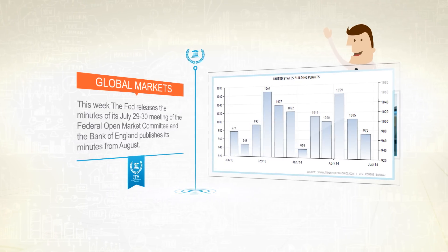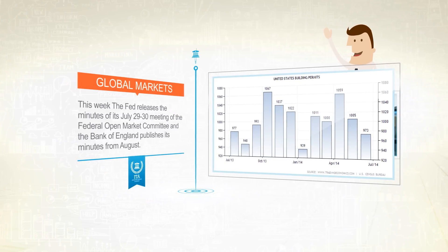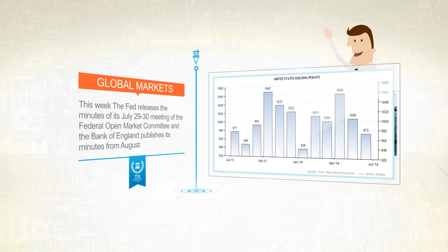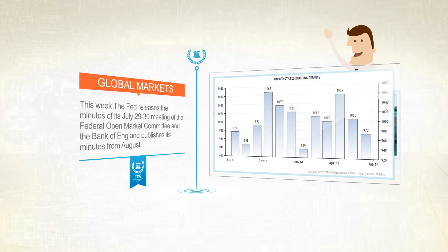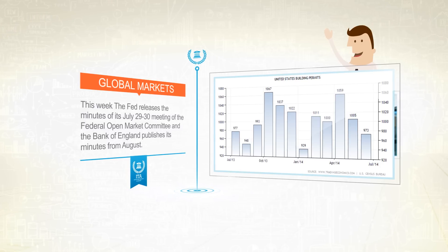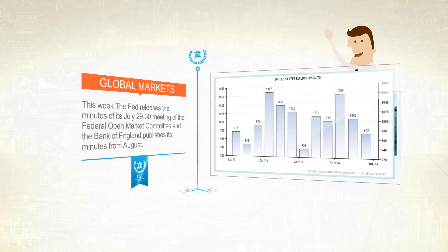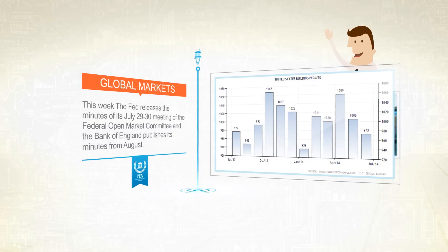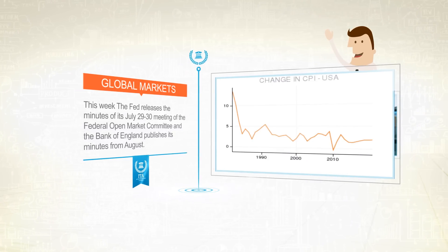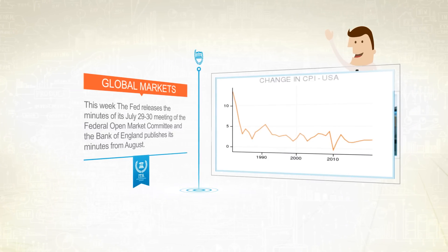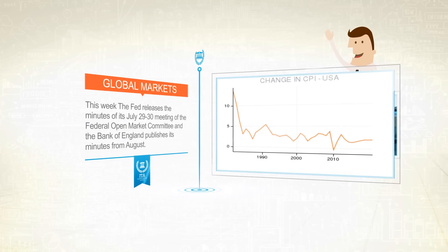Building permits may also increase, signaling residential construction is on the mend. This is followed by the US consumer price index, which rose in July at the slowest rate in five months as prices at the gas pump eased. Higher rents may have pushed up core inflation, which excludes food and fuel.